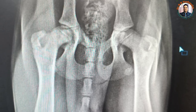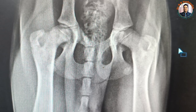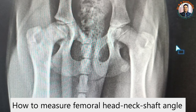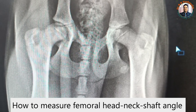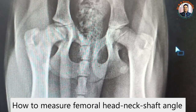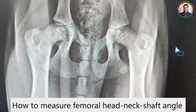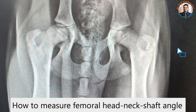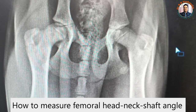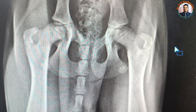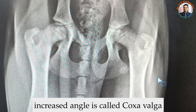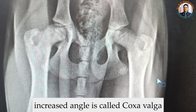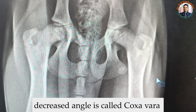Today I am going to demonstrate how to calculate the femoral head neck shaft angle. In the case of hip dysplasia, this angle is very important, because by measuring this angle we can say whether there is a coxa valga or coxa vara. When there is an increased angle, we say coxa valga; if there is a decreased angle, we say coxa vara.